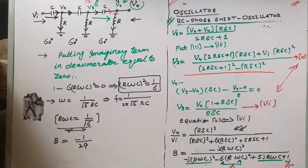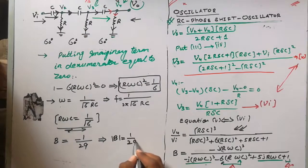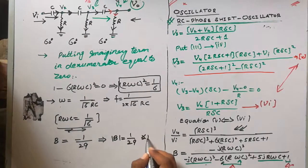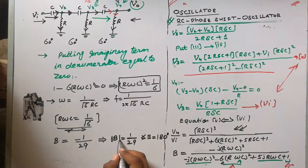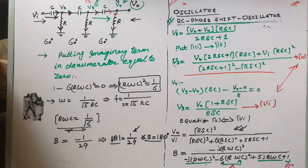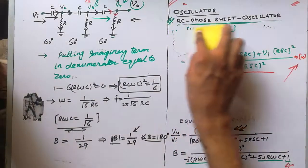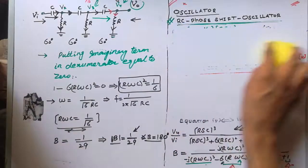Substituting this frequency back, the gain B evaluates to minus 1/29. This means the magnitude of B equals 1/29 and the phase of B equals 180 degrees. We have therefore established both key properties of the feedback network.